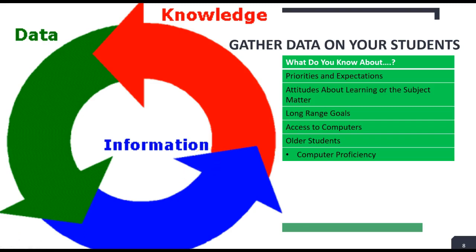As you gather data on your students, you have to ask yourself what do you know about them. Some things to consider — from a course design course I took for my PhD — include: what do you know about your students' priorities and expectations, both regarding the course and regarding you as the instructor? Our syllabus is a contract between the two of us. What do you know about their attitudes about learning or the subject matter? Are they interested in the content, or just taking it because it's required?